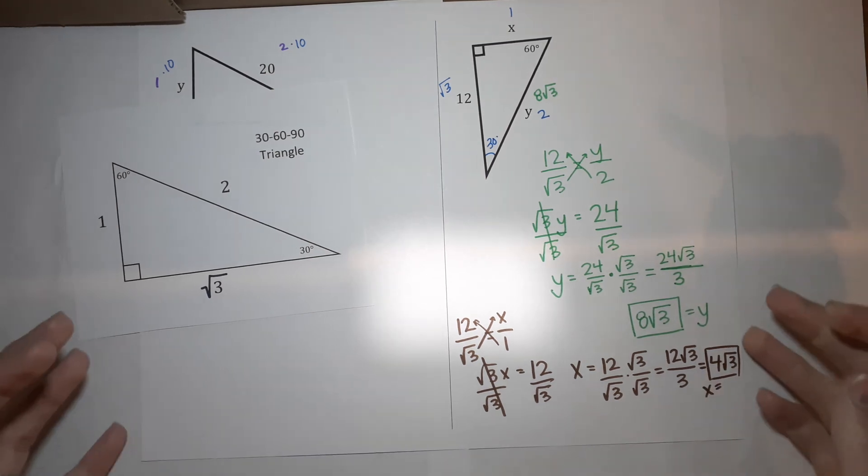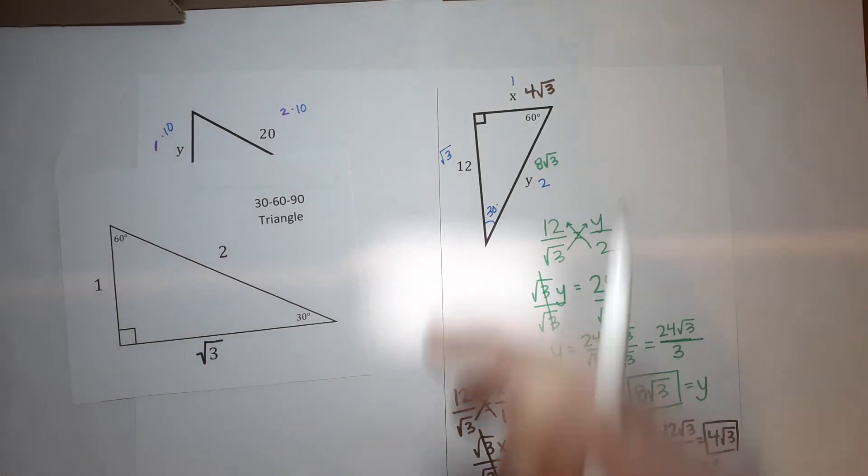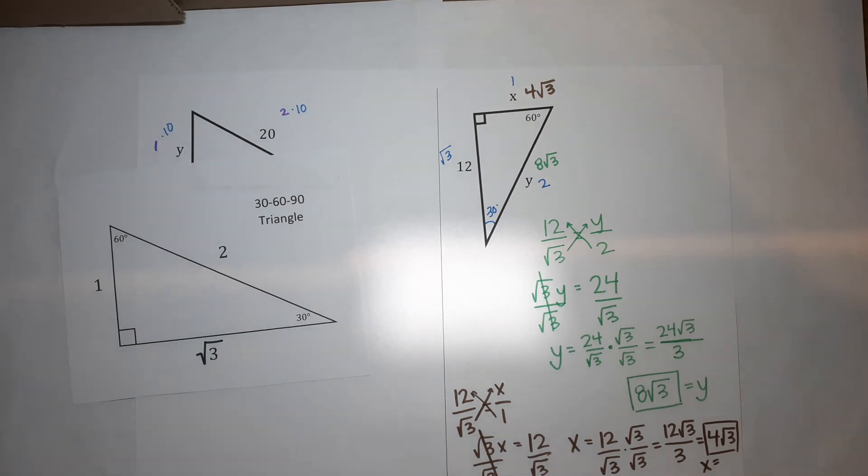So X is 4 square roots of 3. And you are done. All right. Get your homework done. Go to bed. Have dreams of math in our numbers.